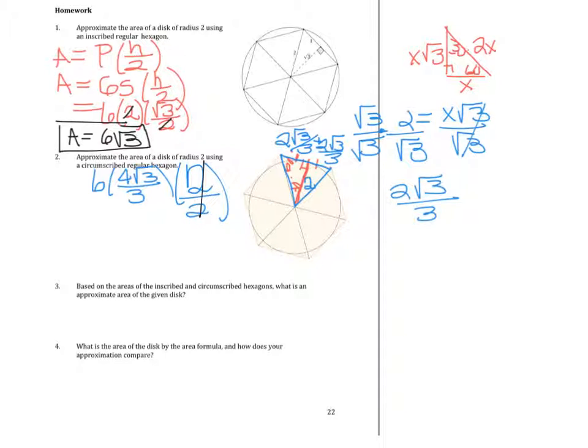This cancels out to be 1, so I can take the 3 and divide it into the 6 two times. 2 times 4 is 8 radical 3. That's the approximation for the area of this disk.